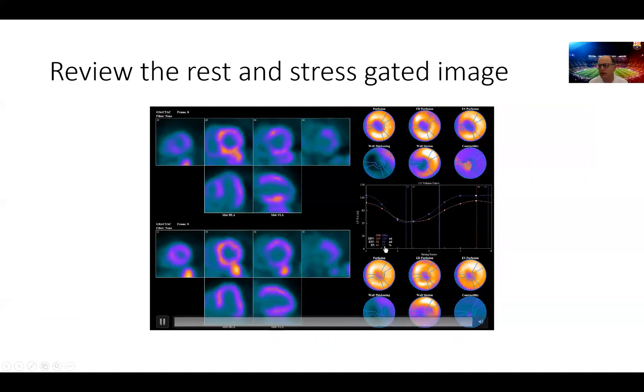The second observation is this left ventricular dilatation post stress where you can see the systolic volume and diastolic volume going up and the left ventricular systolic function going down from 52 percent at rest to 44 percent post stress. These are again all prognostic signs that we should report when we go to the interpretation of the test later.